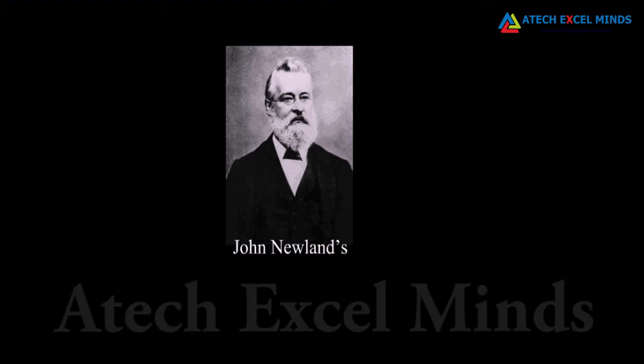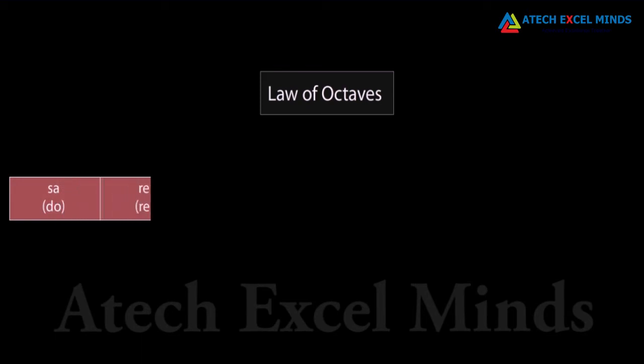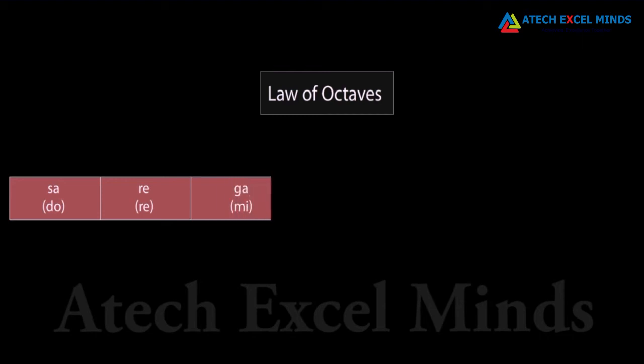In 1866, John Newlands found that if the elements were arranged in order of increasing atomic masses, every eighth element had similar properties to the first. He compared this to the octaves found in music, and Newlands' law was therefore named the Law of Octaves. In the Indian system of music, there are seven musical notes in a scale: Sa, Re, Ga, Ma, Pa, Da, Ni.